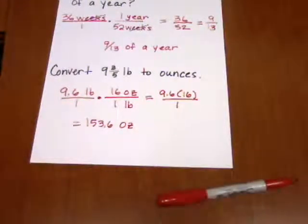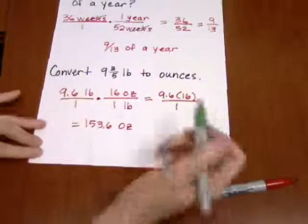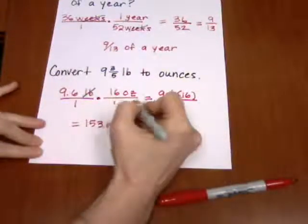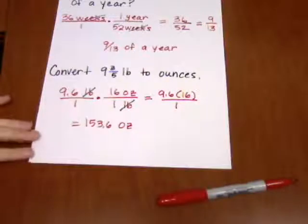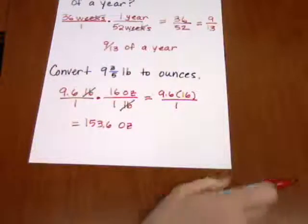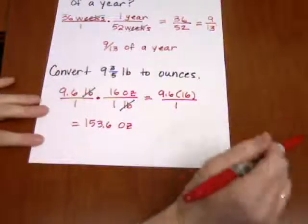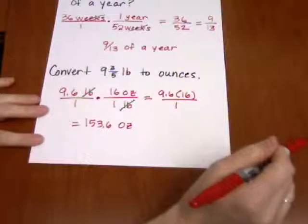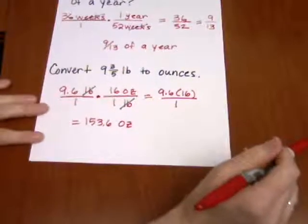You can verify that this is ounces because you should notice that the pounds cancel each other out, leaving you with ounces. Now, typically when you write ounces, you won't leave a decimal. If you read about the apothecary system, you'll want to write that as a fraction. So I'll change the 0.6 back to a fraction.